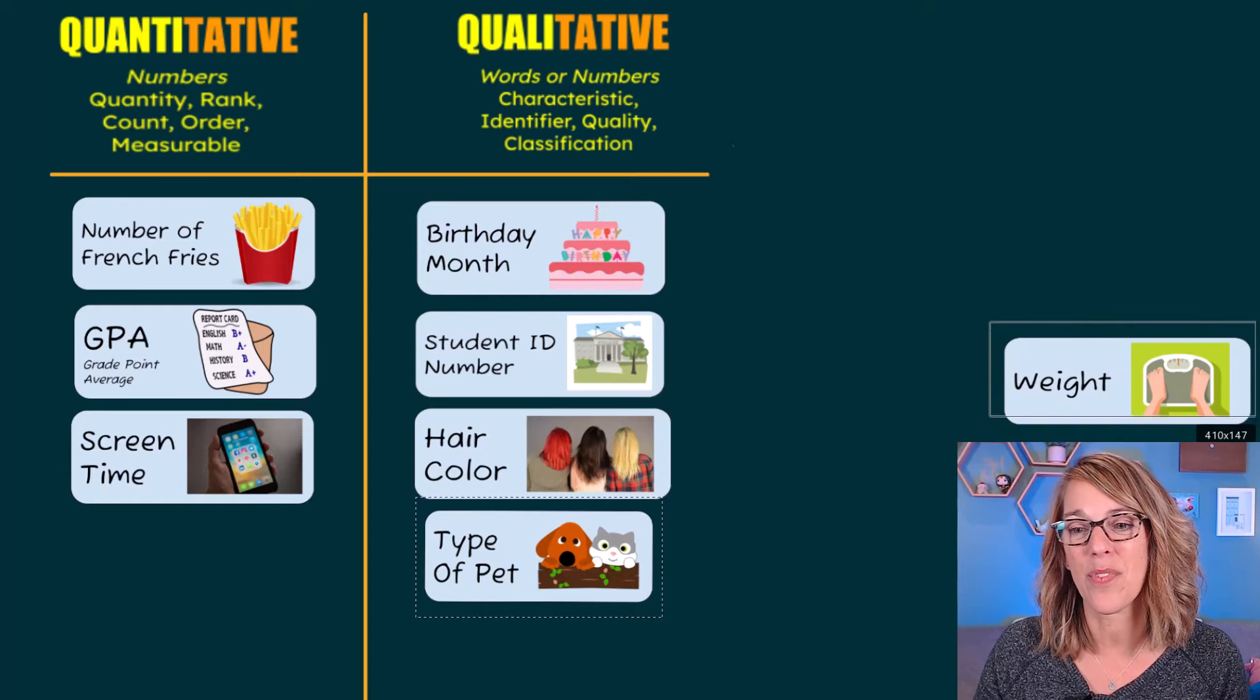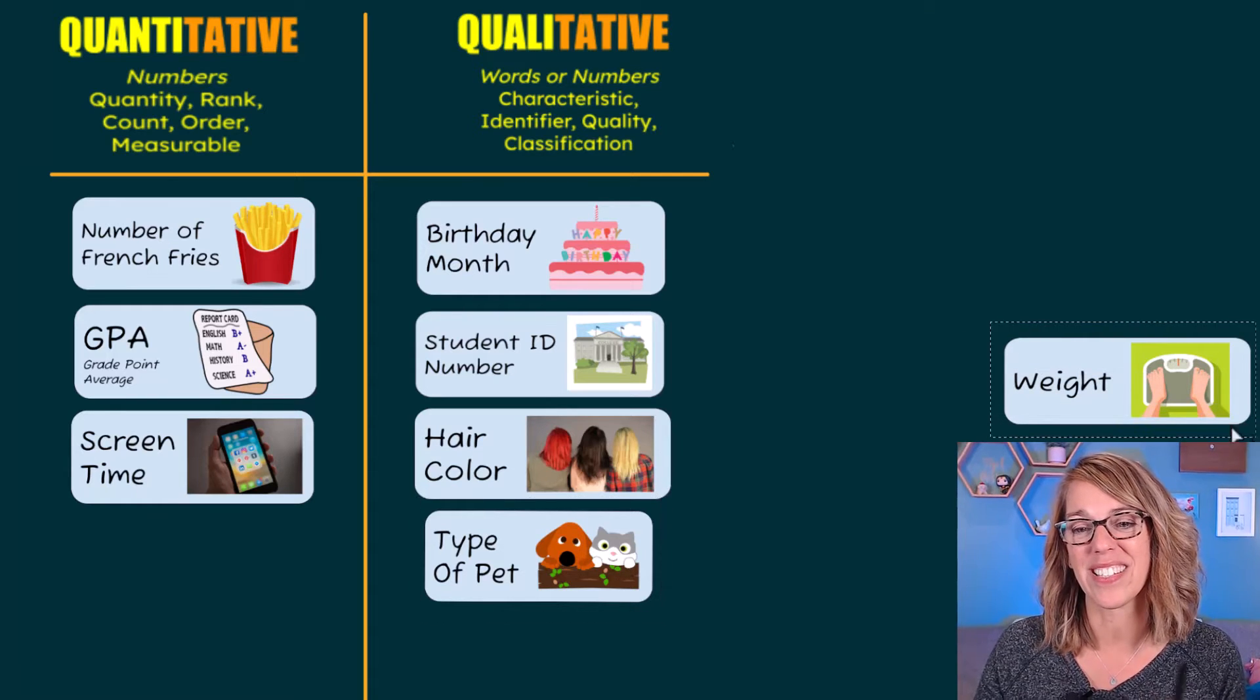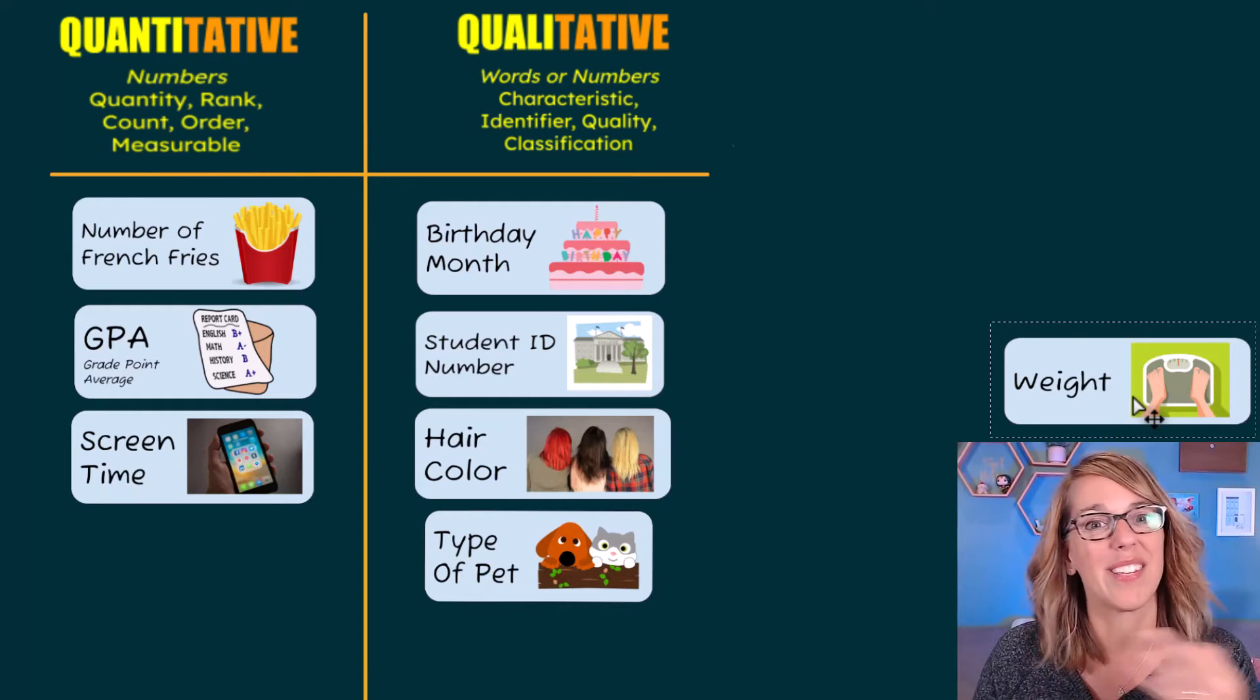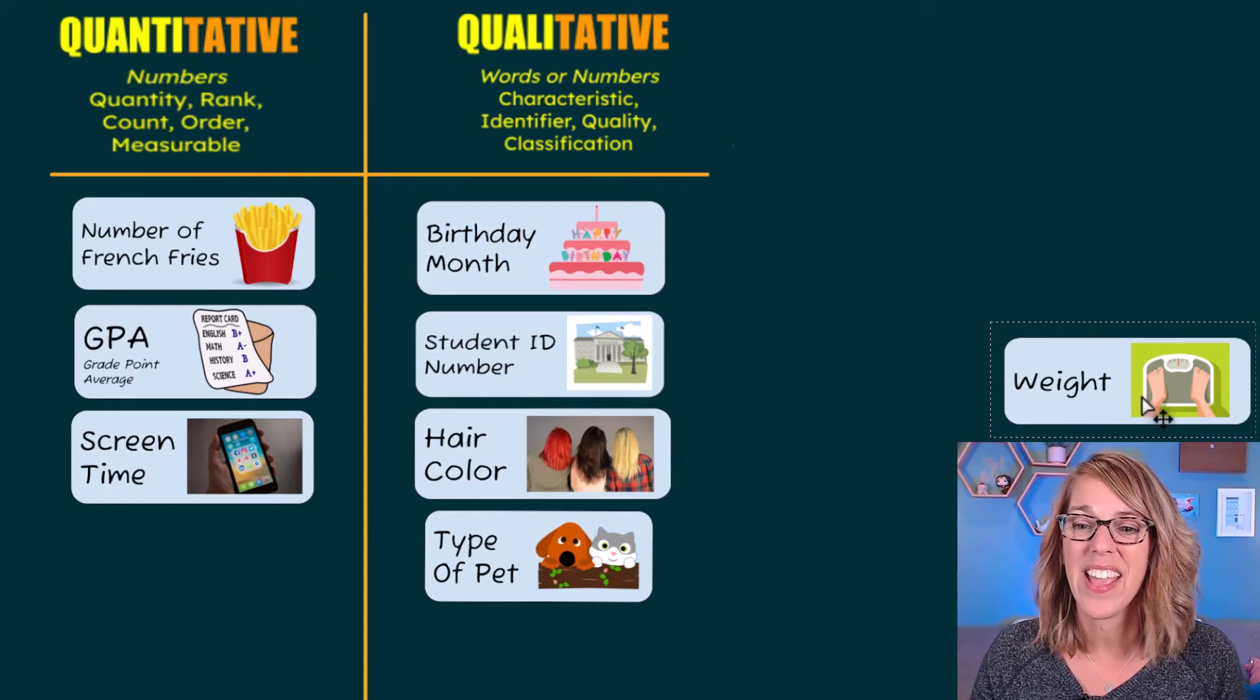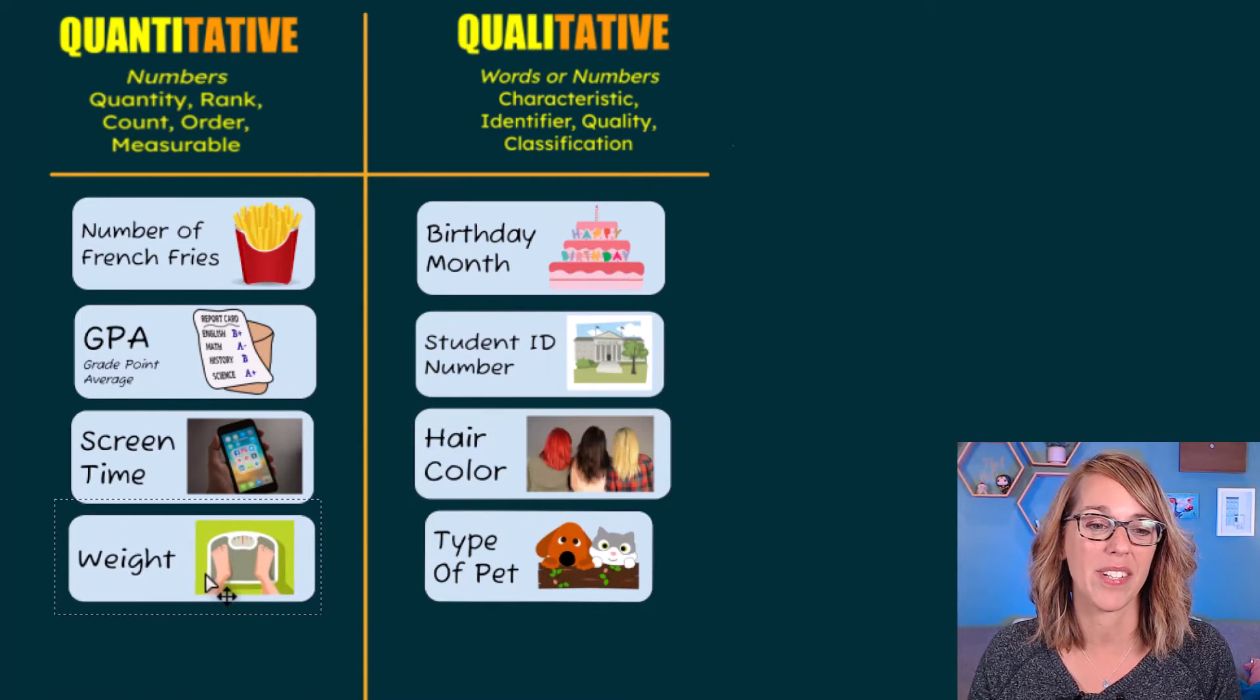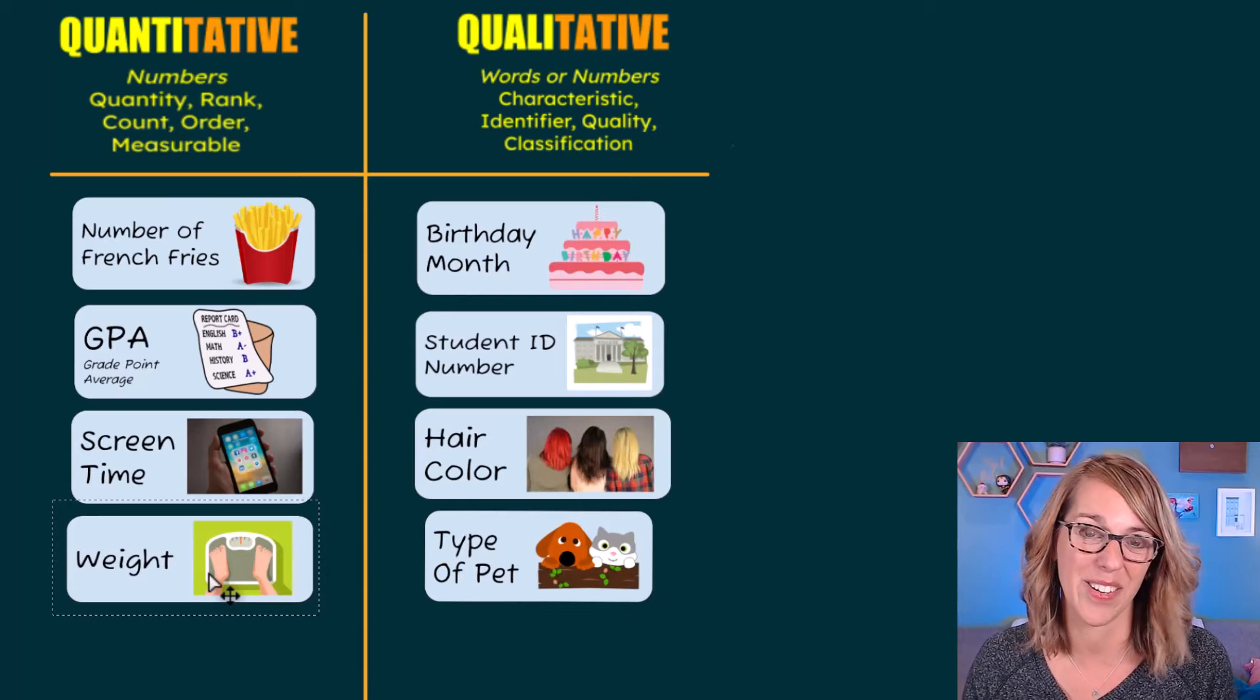And then finally, before we get into discrete and continuous, let's take a look at weight. So weight, you're going to stand on that scale and it's going to give you a number, hopefully a number that makes you happy. And that is a quantity. It's an amount of pounds or kilograms.